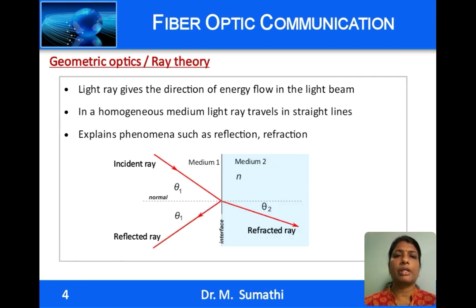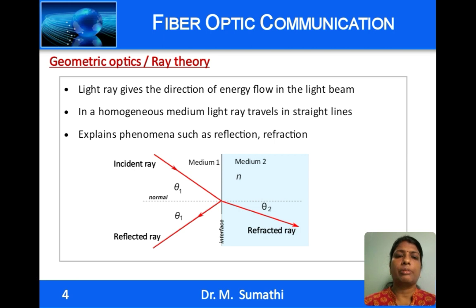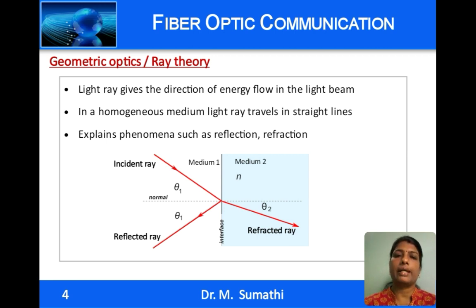Considering Geometric Optics or Ray Theory, light is considered to be rays, and light rays give the direction of propagation of flow of energy. A light ray travels in a straight line in a homogeneous medium and at interfaces gets reflected and refracted. The angle of reflection is equal to the angle of incidence, and the angle of refraction is less than the angle of incidence when light travels from a rarer medium to a denser medium.